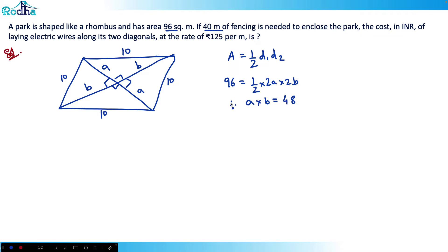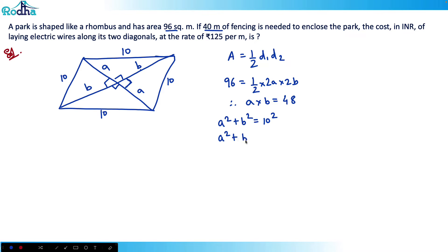Since the diagonals meet at 90 degrees, we can apply the Pythagorean theorem to get one more equation: A² + B² = 10² = 100.